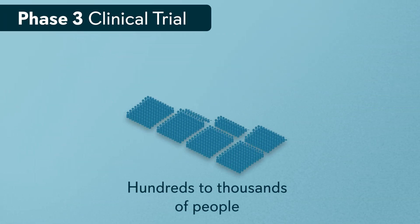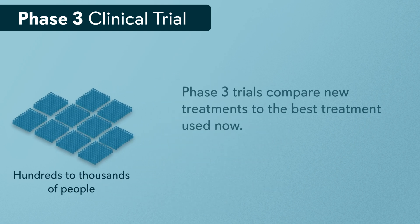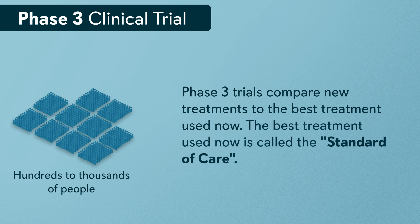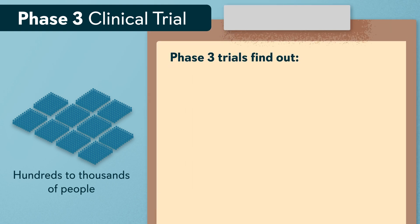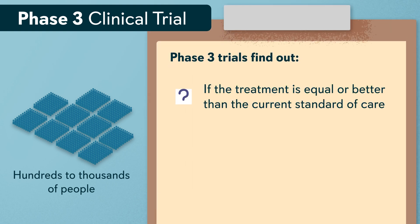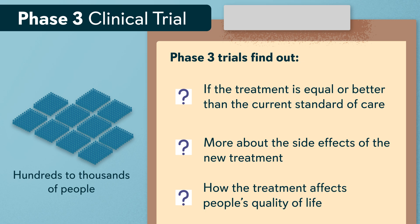Phase three trials usually involve hundreds to thousands of people. Phase three trials compare new treatments to the best treatment used now, which is called the standard of care. The aim of a phase three trial is to find out if the treatment is equal or better than the current standard of care, more about the side effects of the new treatment, and how the treatment affects people's quality of life.